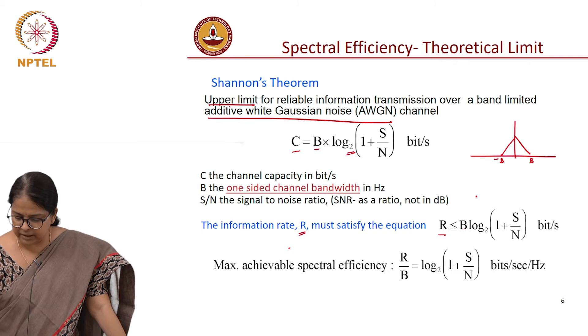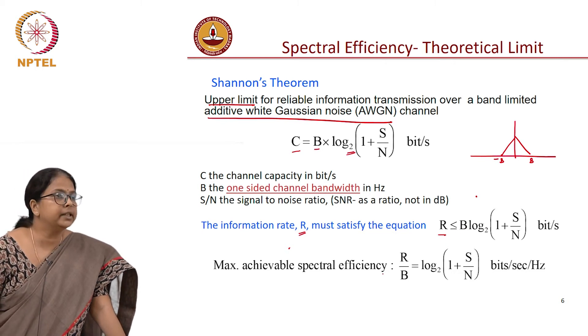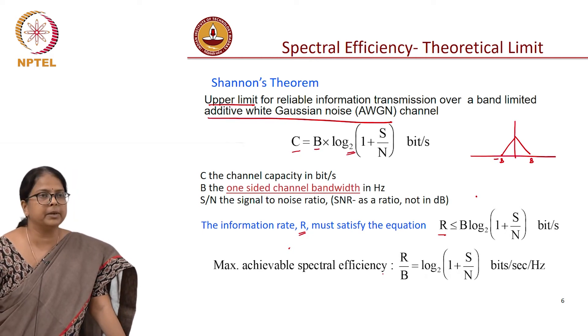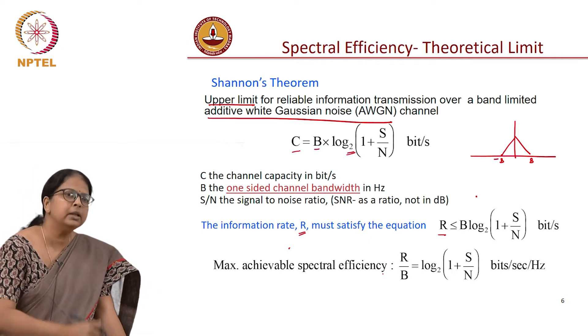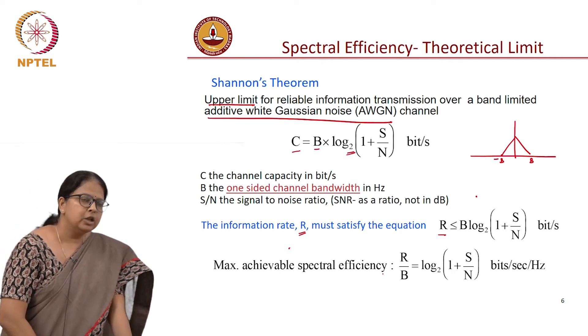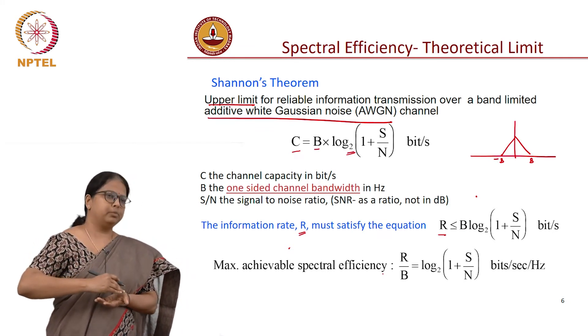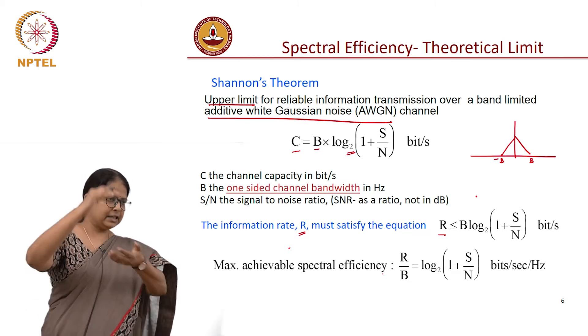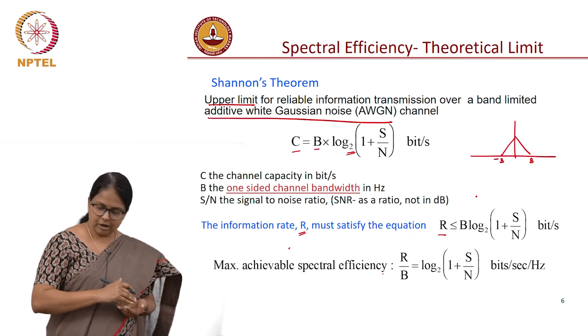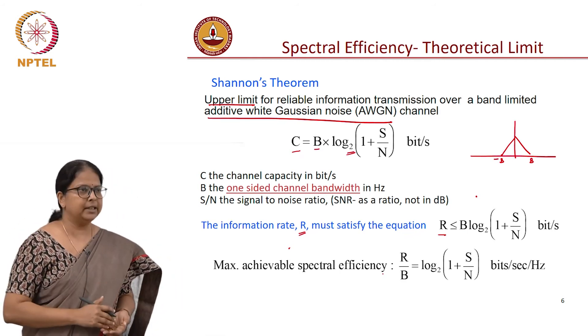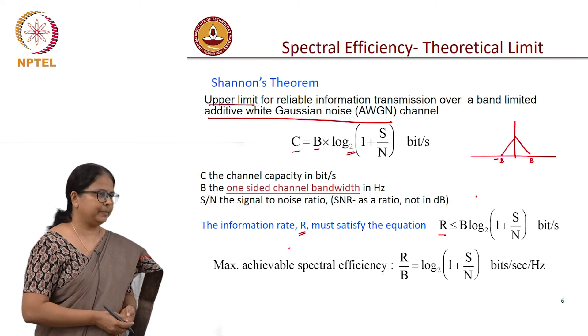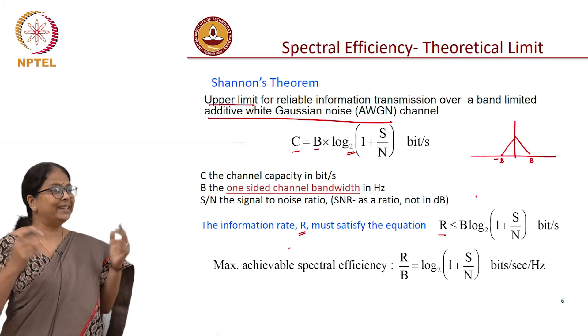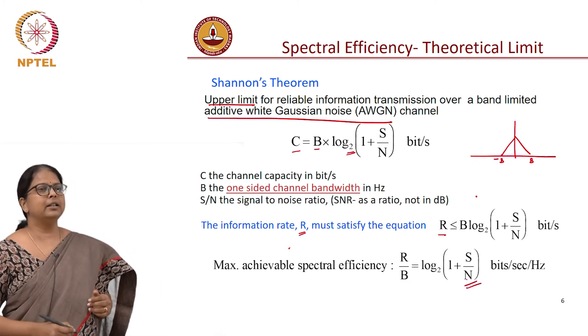The maximum achievable spectral efficiency is R over B. Spectral efficiency is data rate divided by bandwidth. R over B is log of 1 plus S by N, log to the base 2. This gives you the fundamental limit. As your signal-to-noise ratio becomes poorer and poorer, you have more noise in the system. S by N ratio starts falling and as your S by N ratio starts decreasing, log of 1 plus S by N will start decreasing and that reduces your spectral efficiency. You can in principle get very high spectral efficiency, provided you can guarantee the corresponding signal-to-noise ratio.